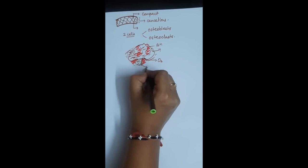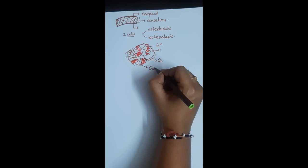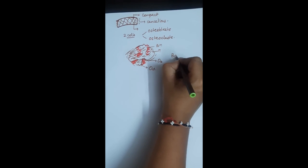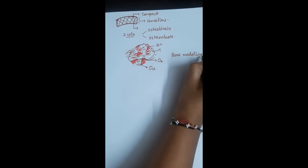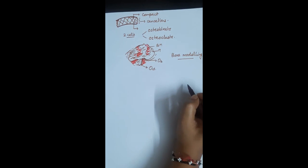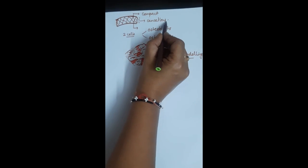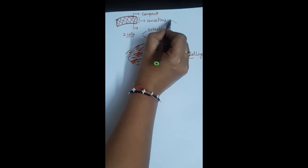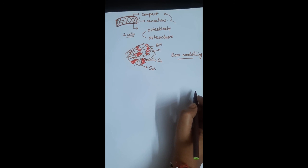Osteoblasts and osteoclasts. Now by the balanced action between the two, bone remodeling takes place. What is bone remodeling? Nothing but what we have discussed: the formation of cancellous bone and then conversion of a part of cancellous bone into a compact bone.